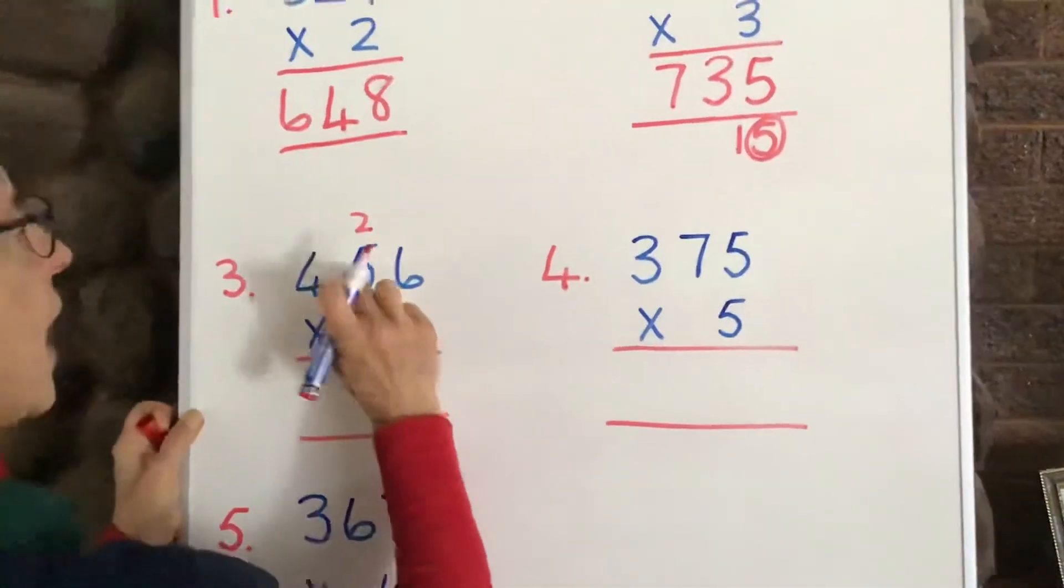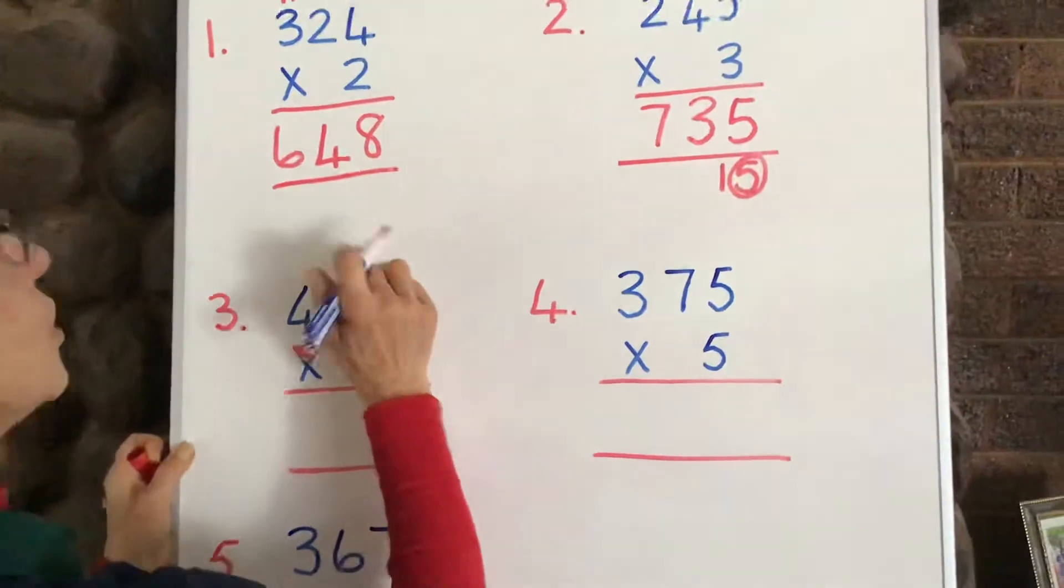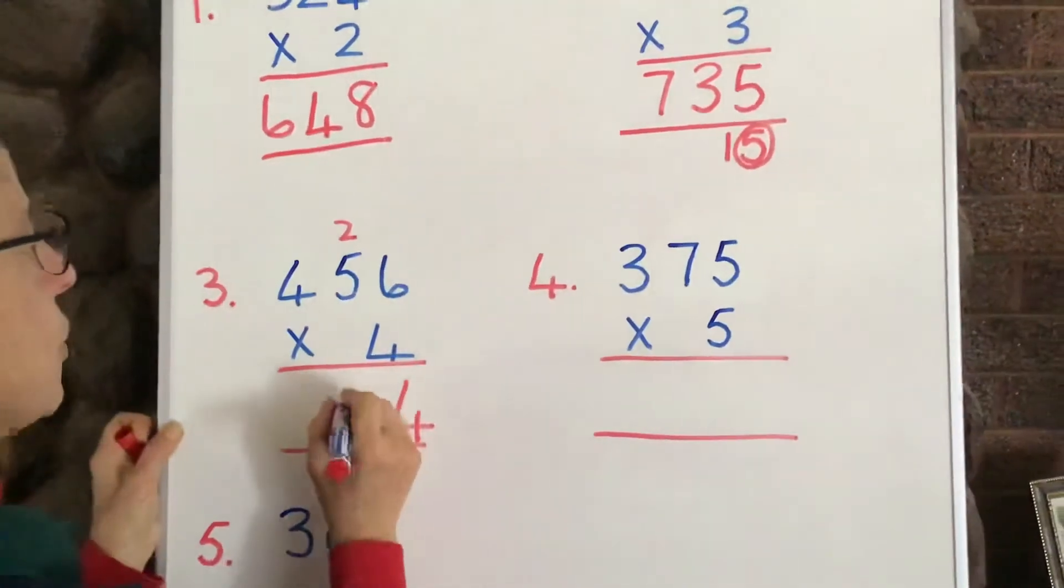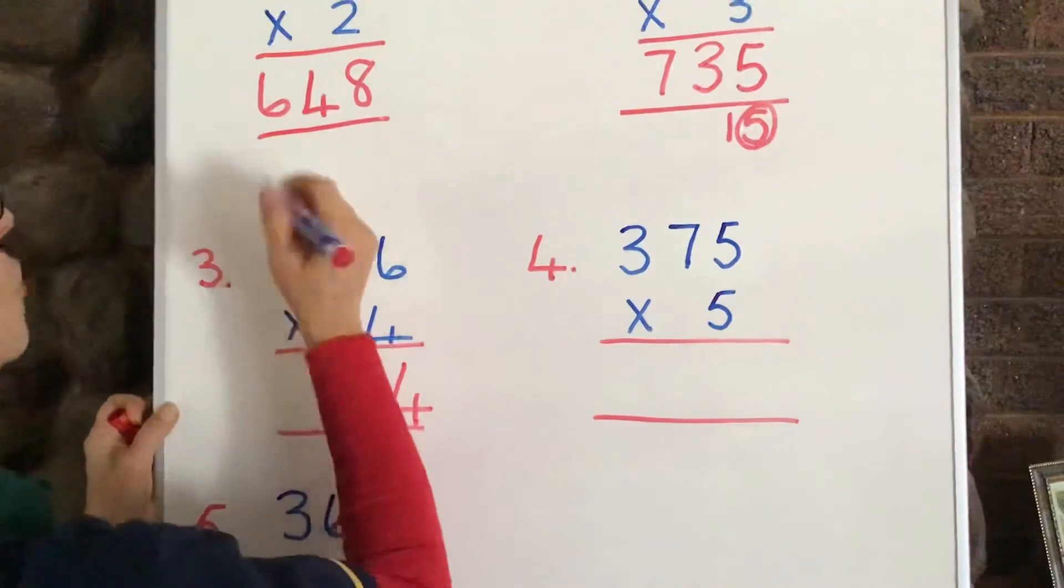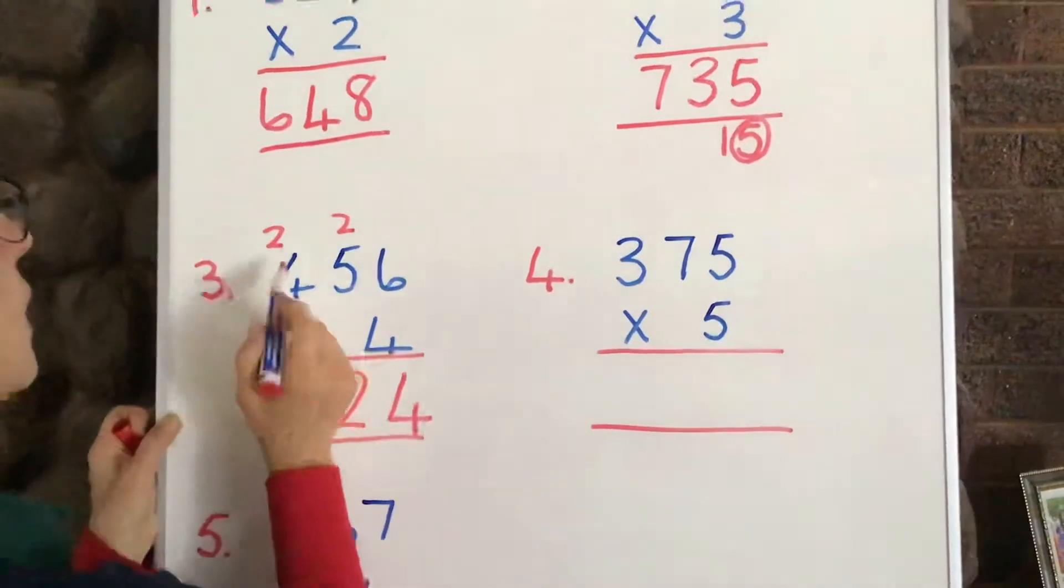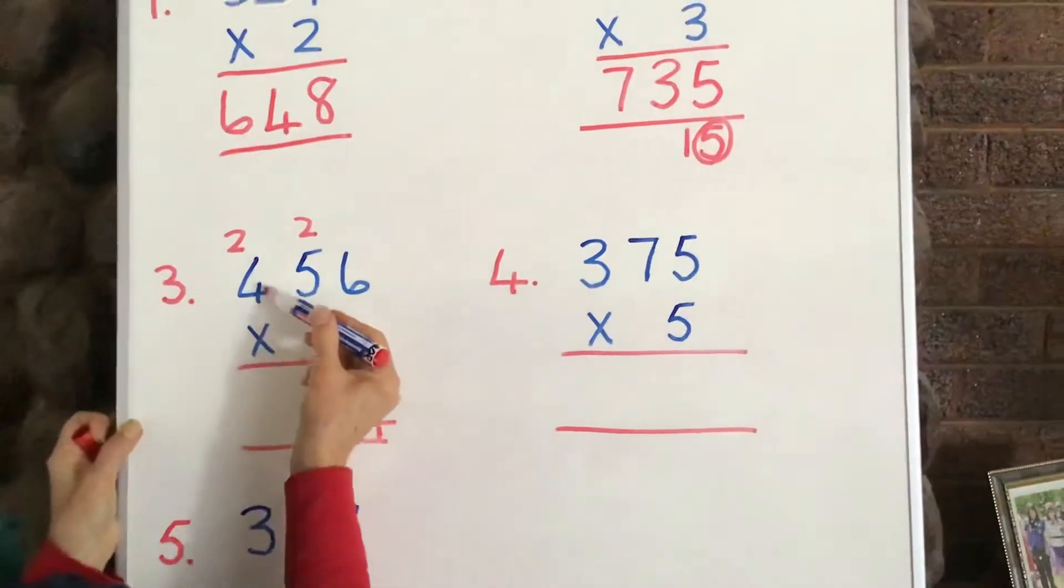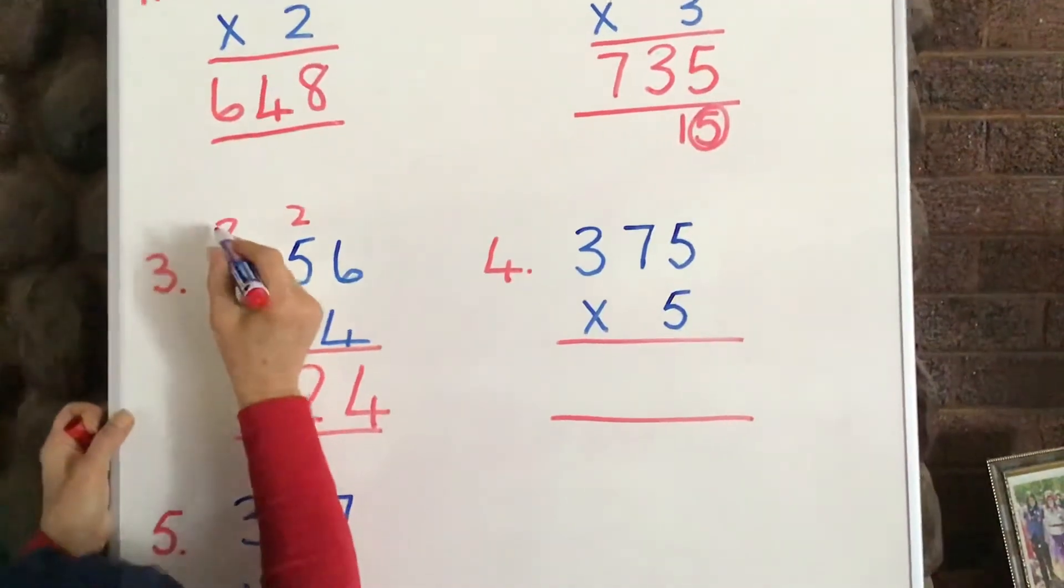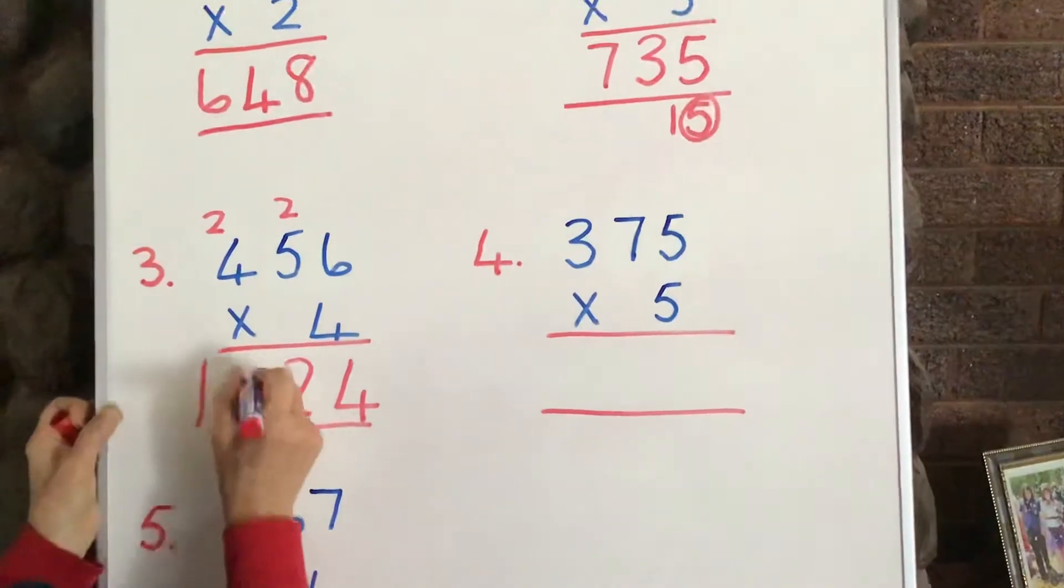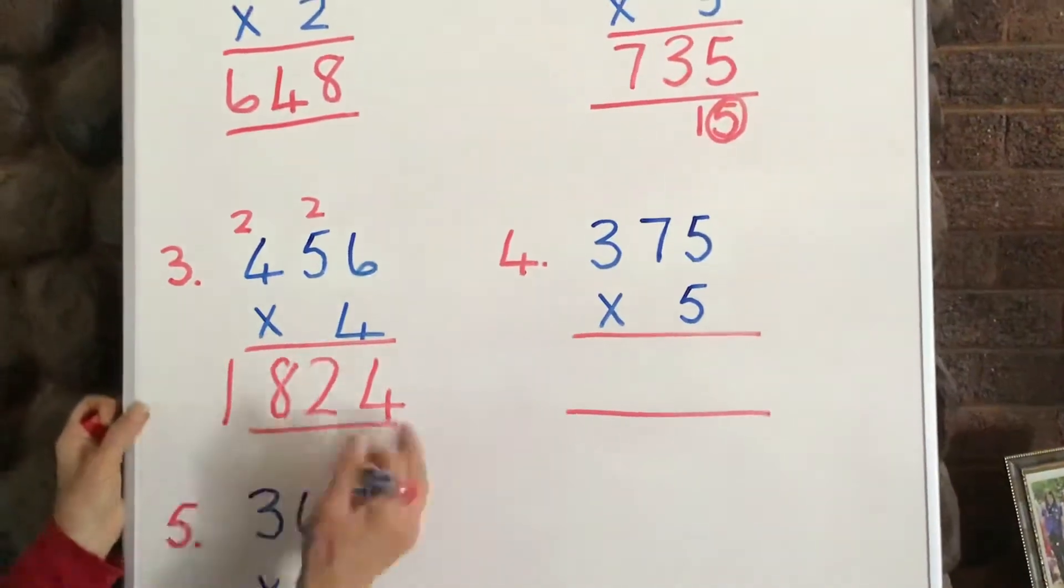Now, 4 times 5 is 20, plus 2, 22. So, you put down the 2 there, and you carry the 20 up there, and now it's in the hundreds column. 4 times 4 is 16, plus the 2 after that, and you get 18. Right, 1824.